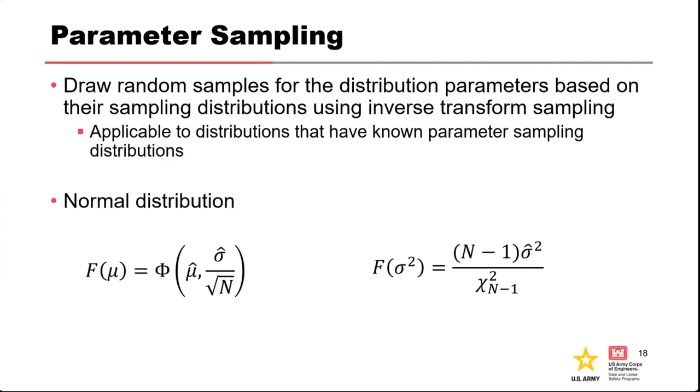Another less common method is parameter sampling, where you draw random samples if you know the sampling distribution of your parameters. For simple distributions like the normal, we know the sampling distribution for the mean — it's normally distributed with mean equal to the sample mean and standard deviation equal to the standard deviation over the square root of n. The uncertainty in the variance is related to a chi-square distribution. This is used in HEC FDA software, but for distributions beyond the normal it's rarely available.